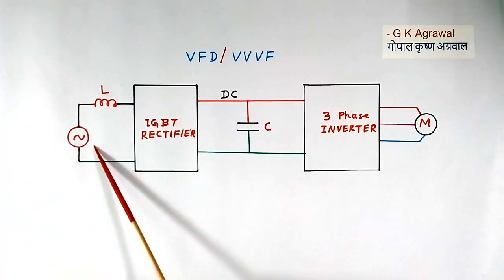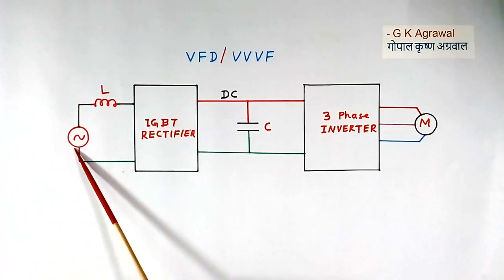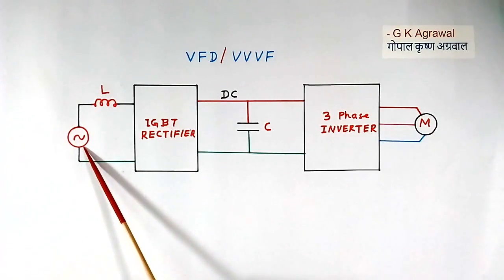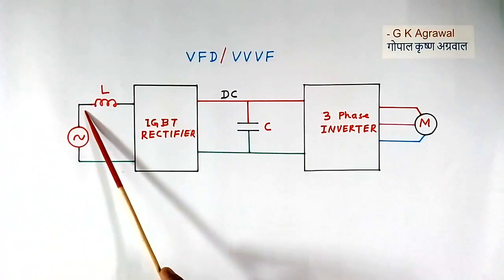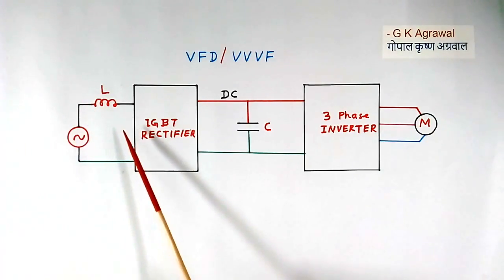This input supply comes from a transformer. And transformer copper loss depends upon the current. Less the current here, it is better.